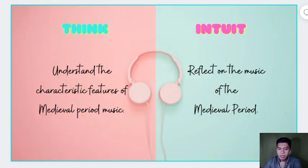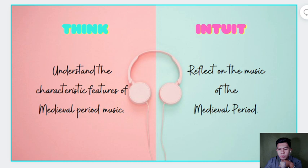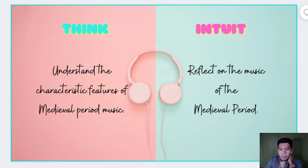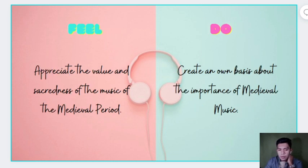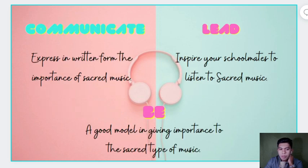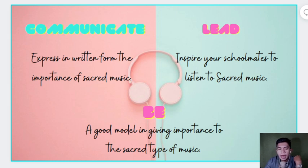These are the objectives for this topic. First, understand the characteristic features of the medieval period. Second, reflect on the music of the medieval period — we'll see that more of the music of the medieval period is focused on church songs or sacred songs, although there were also pop songs during that time. Third, appreciate the value and sacredness of the music of the medieval period. We'll create our own basis about the importance of medieval music, express in written form the importance of sacred music, inspire schoolmates to listen to sacred music, and be a good role model in giving importance to the sacred type of music.